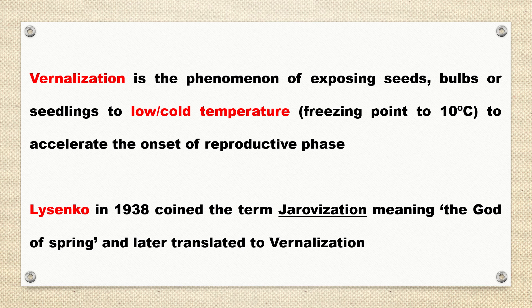The dormant period is cut short. That means the vegetative phase becomes shorter and onset of flowering and fruit setting is hastened.